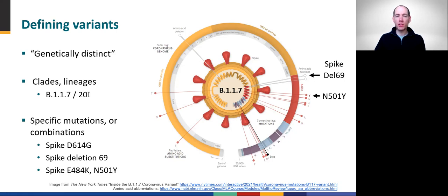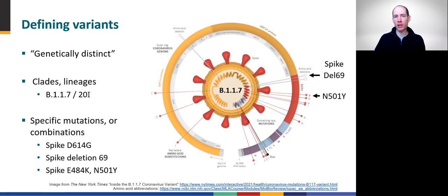Note that we'll avoid using the term strain in our discussion here, although you'll likely hear it used in popular media. There are no hard and fast rules for defining strains of pathogenic microbes, but typically strain classification is reserved for variant clades or lineages when they become sufficiently divergent to exhibit distinct behavior or epidemiology. Throughout this module, we'll stick to simply calling these variants, but be aware that SARS-CoV-2 nomenclature remains an active area of development.